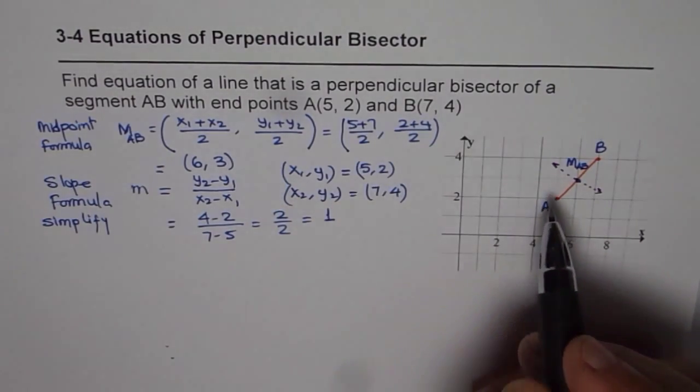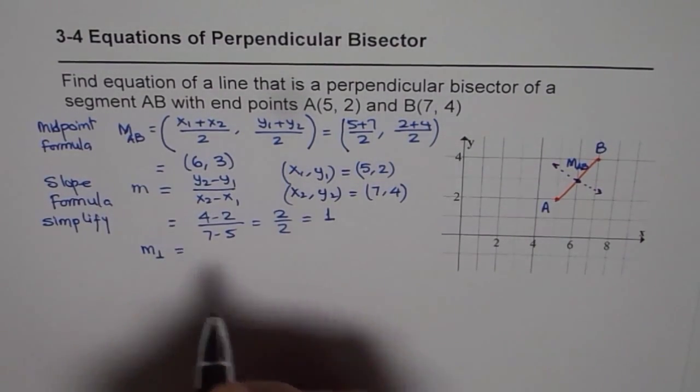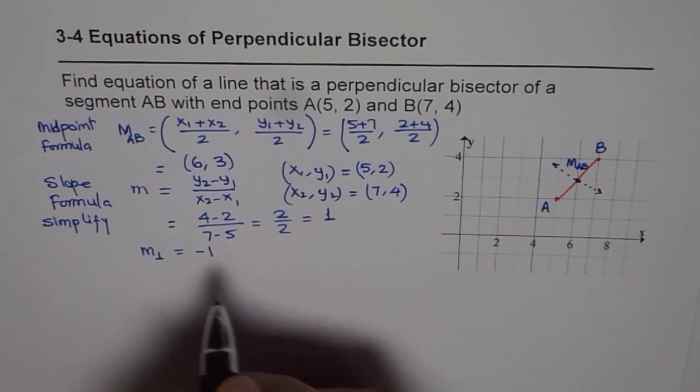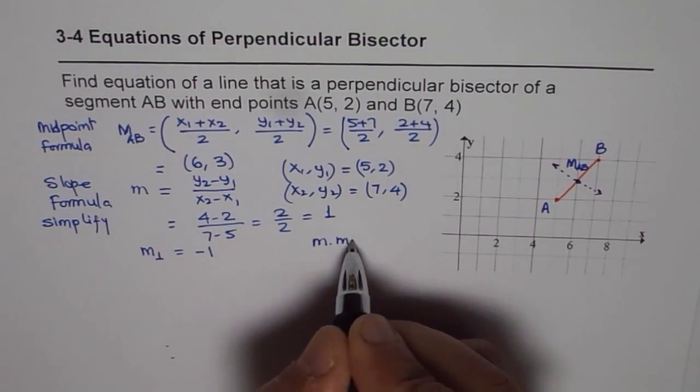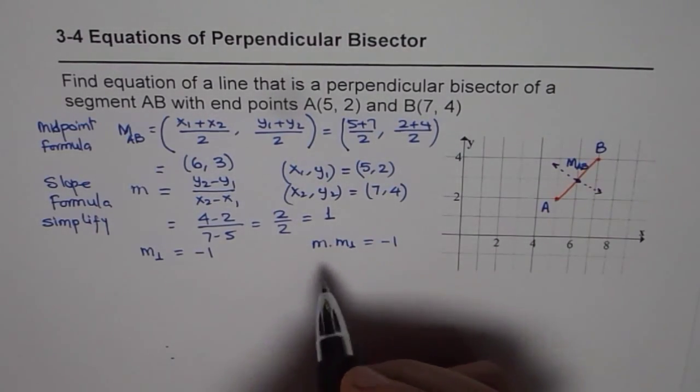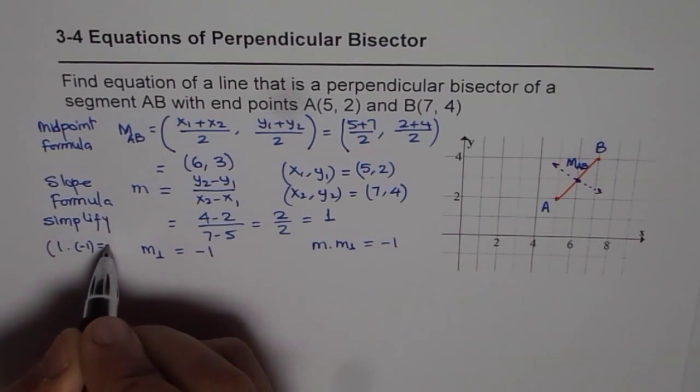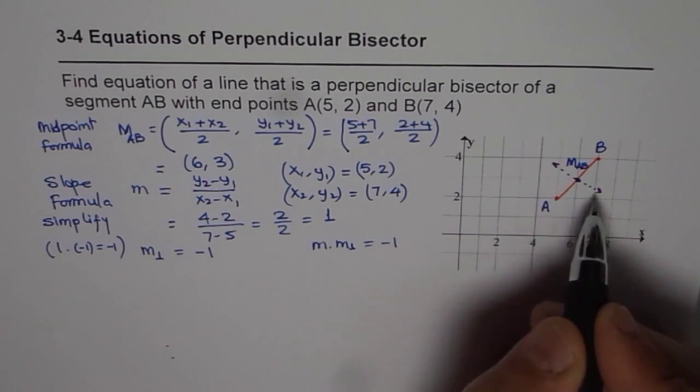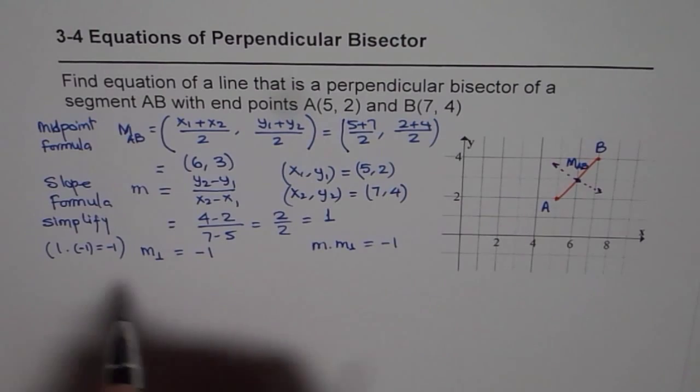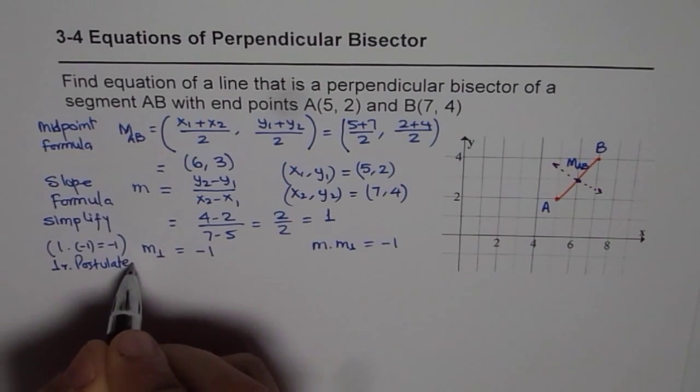The perpendicular bisector slope will be the negative reciprocal of 1, which is -1. The reason is that if I multiply these two slopes, I should get -1. Since the slope of line AB is 1, we get 1 × (-1) = -1. So the line with slope -1 will be perpendicular to AB. This comes from the perpendicular postulate.